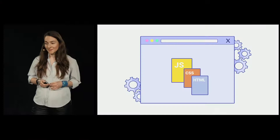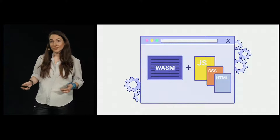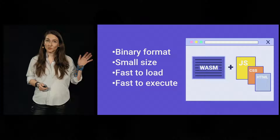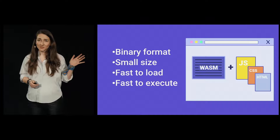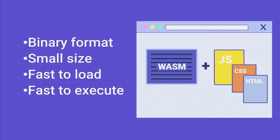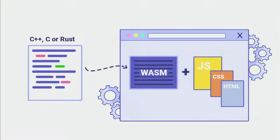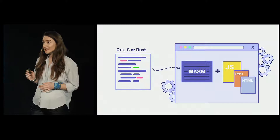That's where WebAssembly steps in. WebAssembly is a new type of code that can be run in modern browsers. It was created to get better performance on the web. It's a low-level binary format — it has a small size, so it's fast to load and fast to execute. You do not write WebAssembly. You compile other, higher-level languages to it.